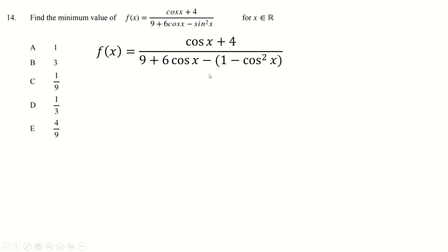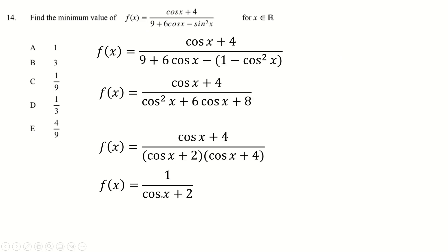Question fourteen. Anyway, sine squared is 1 minus cos squared. So we rearrange that. This factorizes. You cancel out at the top. And now we just say, well, we want to make this as small as possible, which means making this as big as possible, which means choosing cos x to be 1. And we get 1 third. And that question is super nice and super, super straightforward.